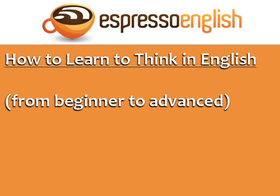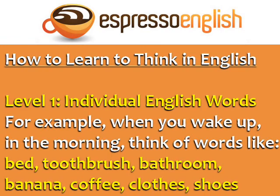So here is how you can learn to think in English from the beginner level to advanced. Level 1 is thinking in individual English words. For example, when you wake up in the morning, think of words like bed, toothbrush, bathroom, eat, banana, coffee, clothes, and shoes.